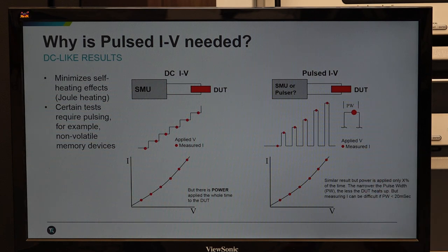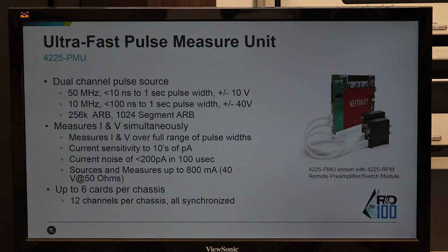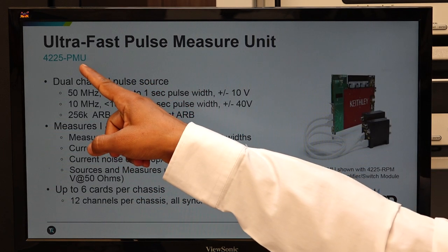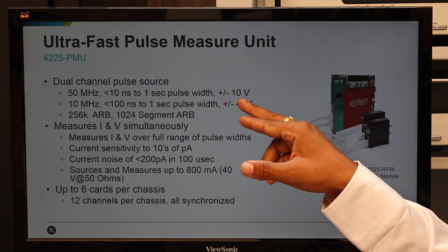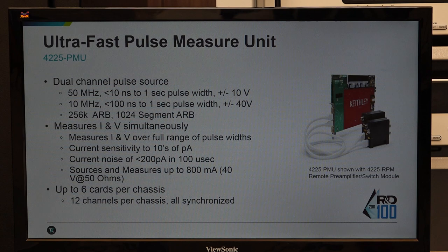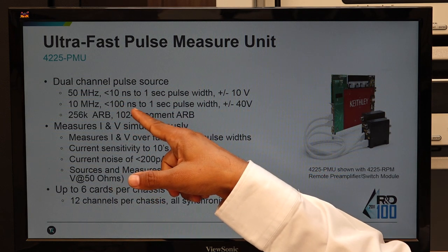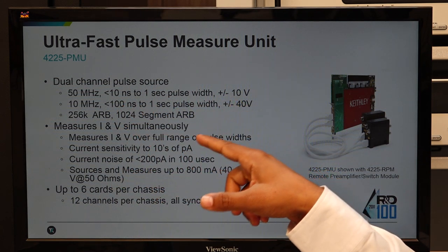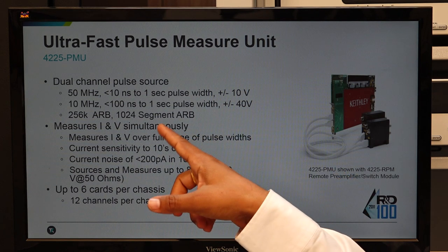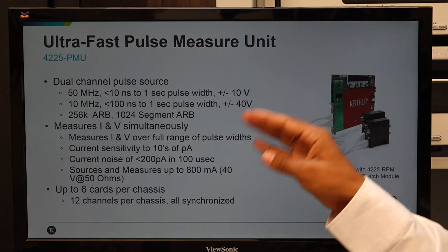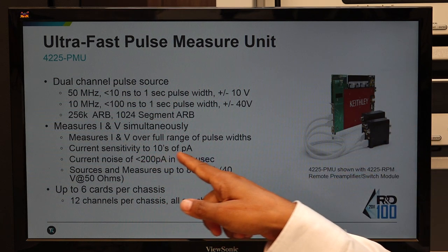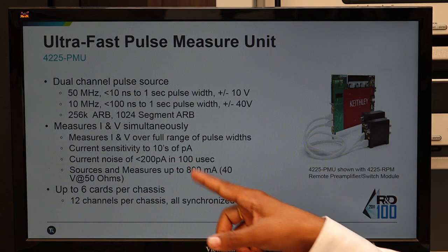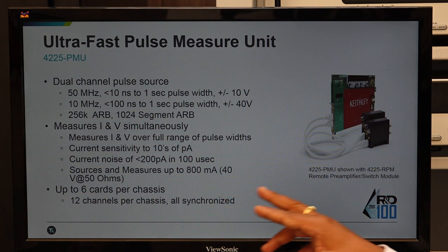When applying voltage in pulses and doing current measurement, measuring lower current much faster is another challenge. For these applications, Keithley Parametric Analyzer 4200 has the ultra-fast pulse source and measurement unit, which is the 4225 PMU. This unit comes with dual channel, supports two voltage ranges: 10 volt and 40 volt. For 10 volt, it supports 50 MHz pulse frequency — pulses from 10 nanoseconds up to 1 second. For 40 volt, pulses from 100 nanoseconds to 1 second. Current sensitivity of 10 picoampere on the lower side, and 800 mA on the higher side.